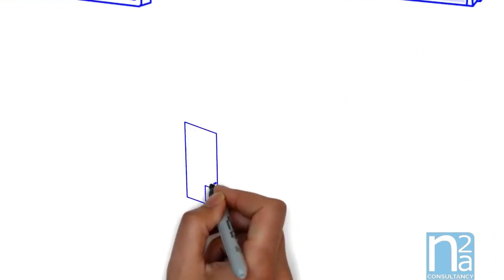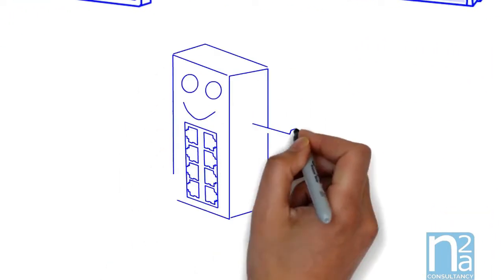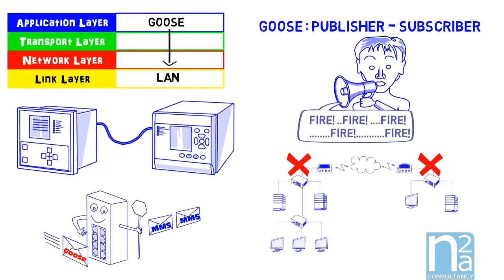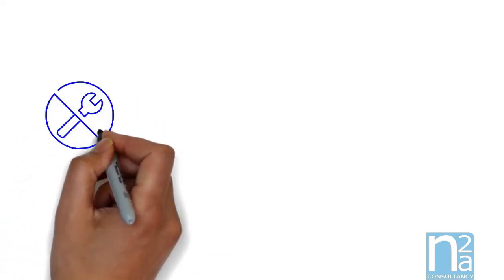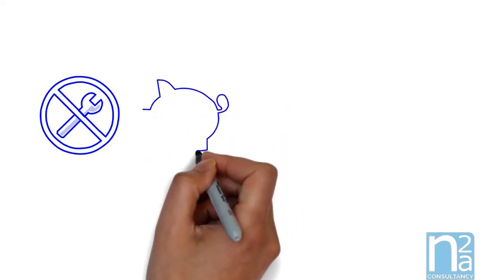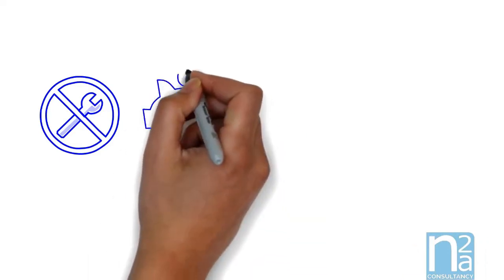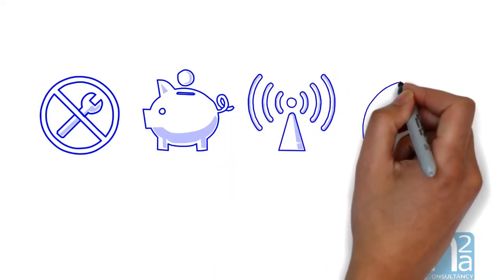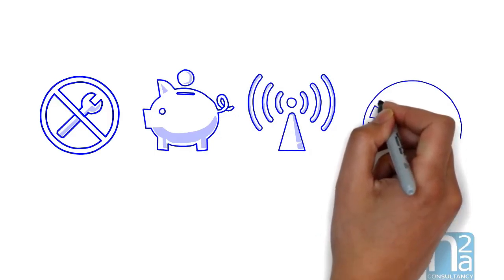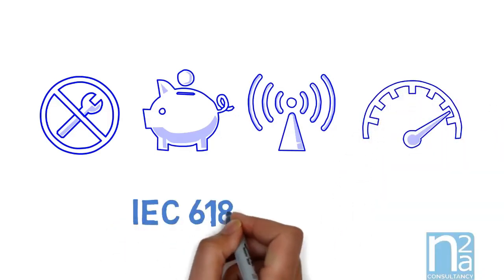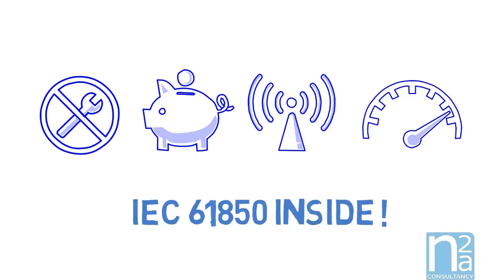GOOSE messages have a lot of advantages compared to hard-wired connections. They are easy to configure and reconfigure without rewiring IEDs. One fiber optic connection is cheaper than tens of copper wires. EMC and EMI sensitivity is dramatically reduced. Messages are delivered quicker than with wire connection, 4 milliseconds compared to at least 10 milliseconds. But to work correctly, IEDs should be designed for it, not converted to it.